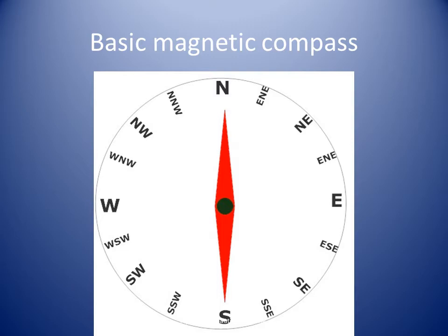This slide represents a basic magnetic compass, such as a Boy Scout would use. The needle, shown in red, is magnetized and seeks the magnetic north pole.